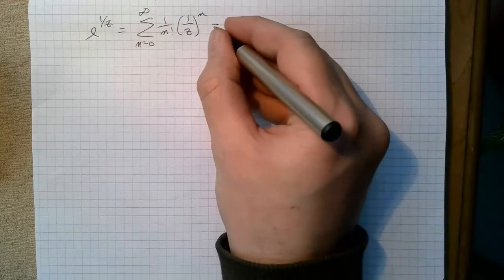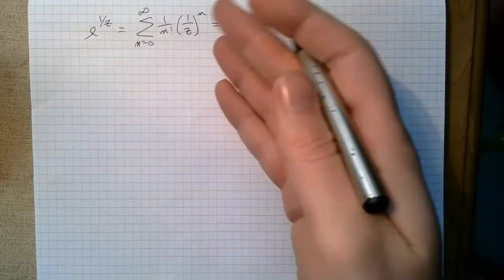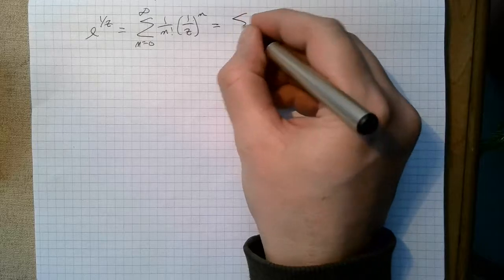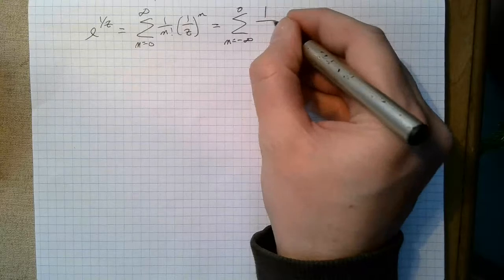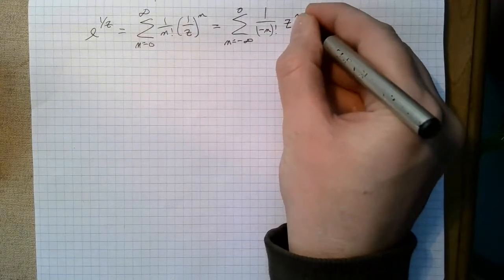And so we can rewrite this in terms so it looks like the Laurent series. We can go from n going to minus infinity to 0, 1 over minus n factorial z to the n, right?